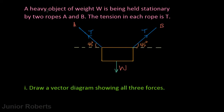Our question says a heavy object of weight W is being held stationary by two ropes A and B. The tension in each rope is T. Here we have a diagram depicting that — our object has a weight of W acting downward, and two ropes A and B are holding this object stationary. Both ropes are held at an angle of 45 degrees, and the tension along the length of each rope is T.